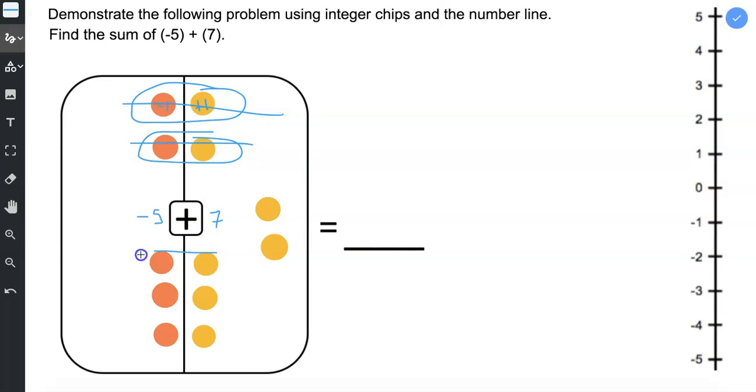Negative one plus one equals zero. This process repeats for each pair. Now that all of those integer chips have disappeared, we're left with just the two positive yellow chips. So our answer is positive two.